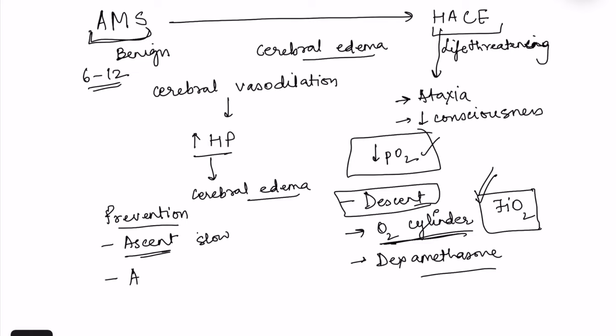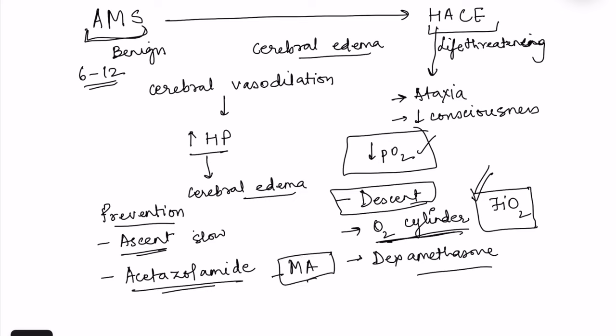Acetazolamide can be given as a preventive drug. It is a diuretic that works by inhibiting the enzyme carbonic anhydrase, and its main side effect when used as a diuretic is metabolic acidosis. Here, we use this side effect beneficially: the metabolic acidosis counters the respiratory alkalosis, helping faster acclimatization to high altitude. It is started one day before the ascent and continued for two to three days while at high altitude.